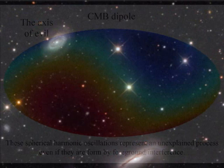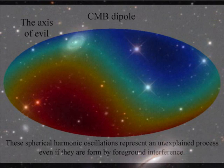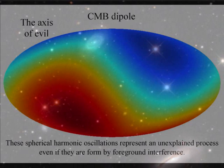This connection or alignment has been named the Axis of Evil because of the potential damage it could do to current Big Bang and standard cosmology theories.